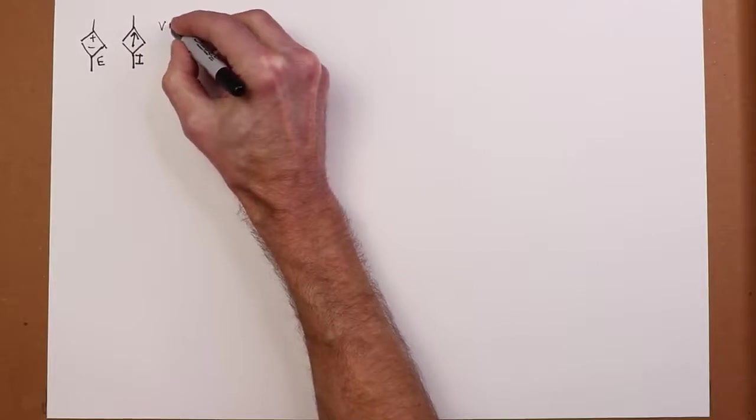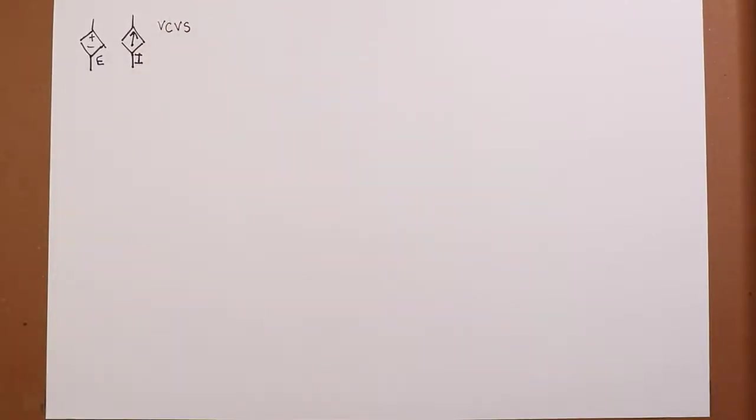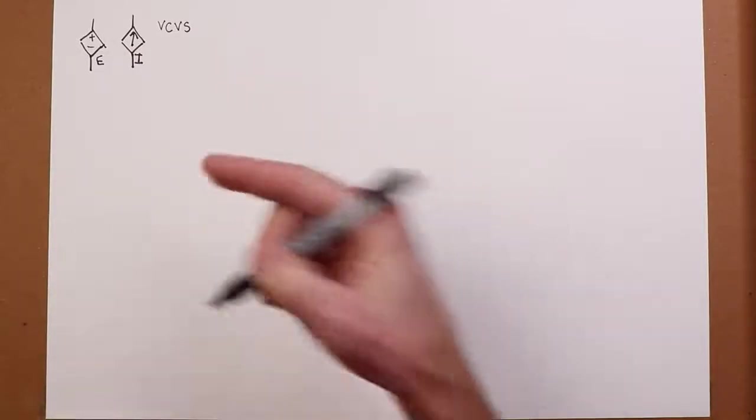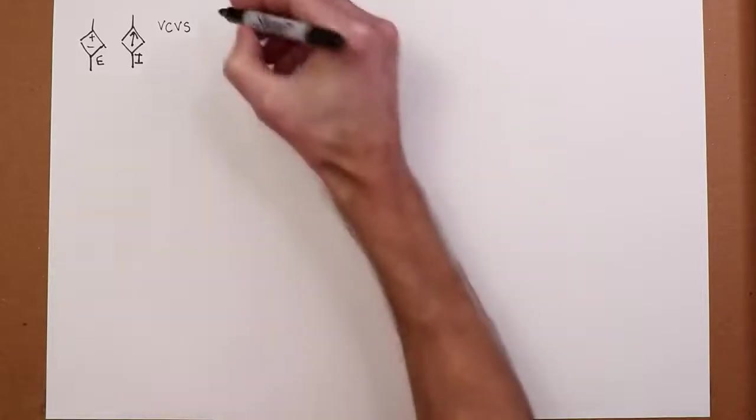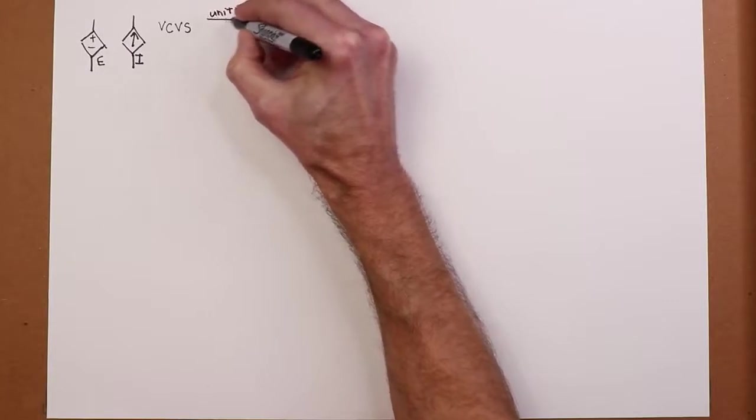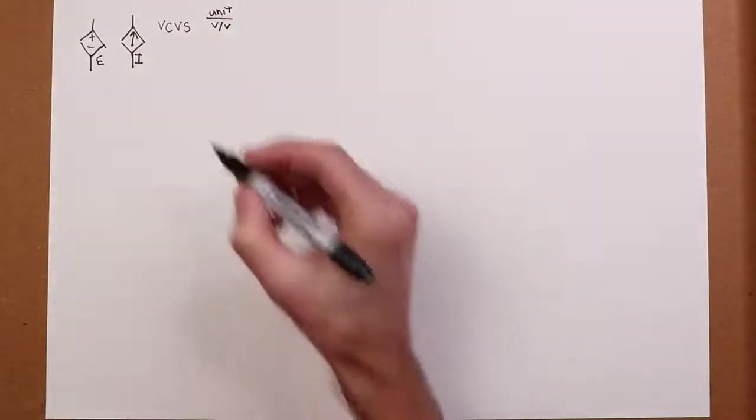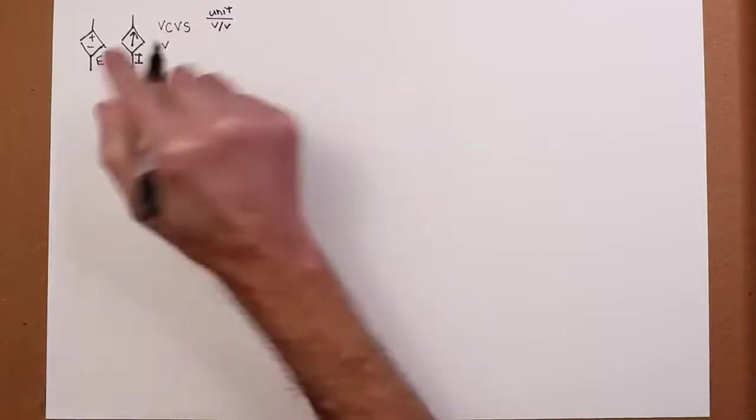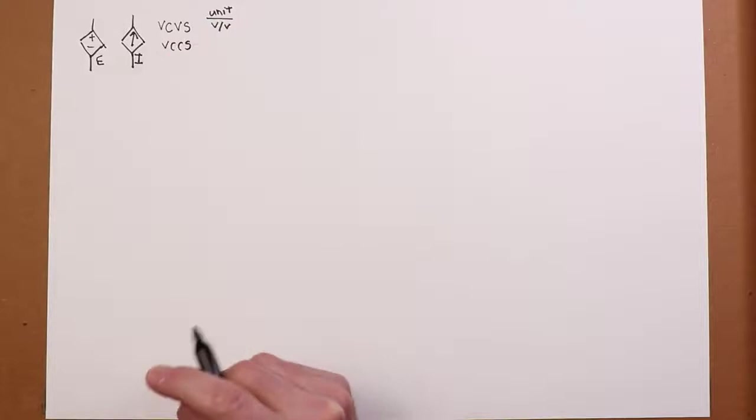You can have a voltage-controlled voltage source, VCVS. So some voltage controls the value of this voltage. So you wind up with a unit of volts per volt. Now we can also have a voltage-controlled current source. That would be this guy, voltage-controlled current source.